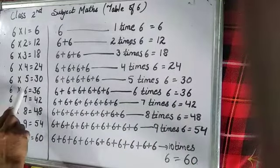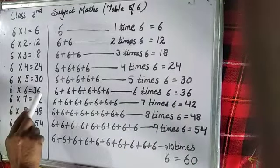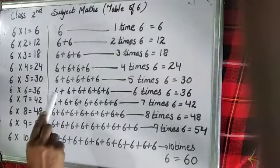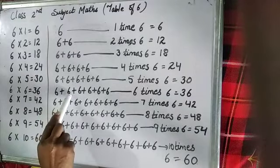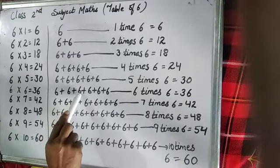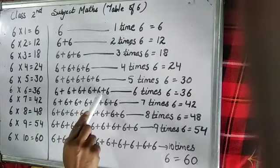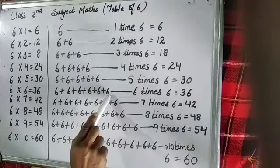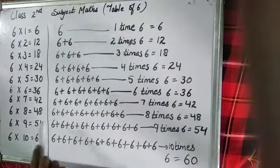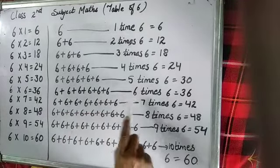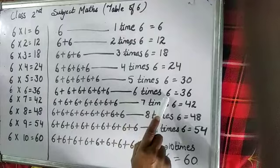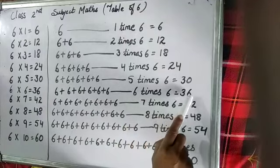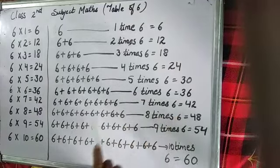6 6s are 36. 1 times 6, 2 times 6, 3 times 6, 4 times 6, 5 times 6, and 6 times 6. And when there is 6 times 6, it is equal to 36.